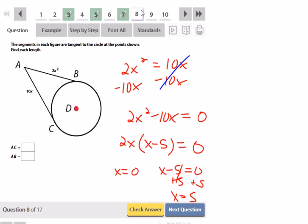So even though there's two possible solutions, zero is not going to work out here. So it has to be that X is equal to 5. And when I plug in 5 for either of them, whether it's 10 times 5 or 2 times 5 squared, either way I'm going to get 50. They're both going to give me 50. So AC is 50 and AB is 50.